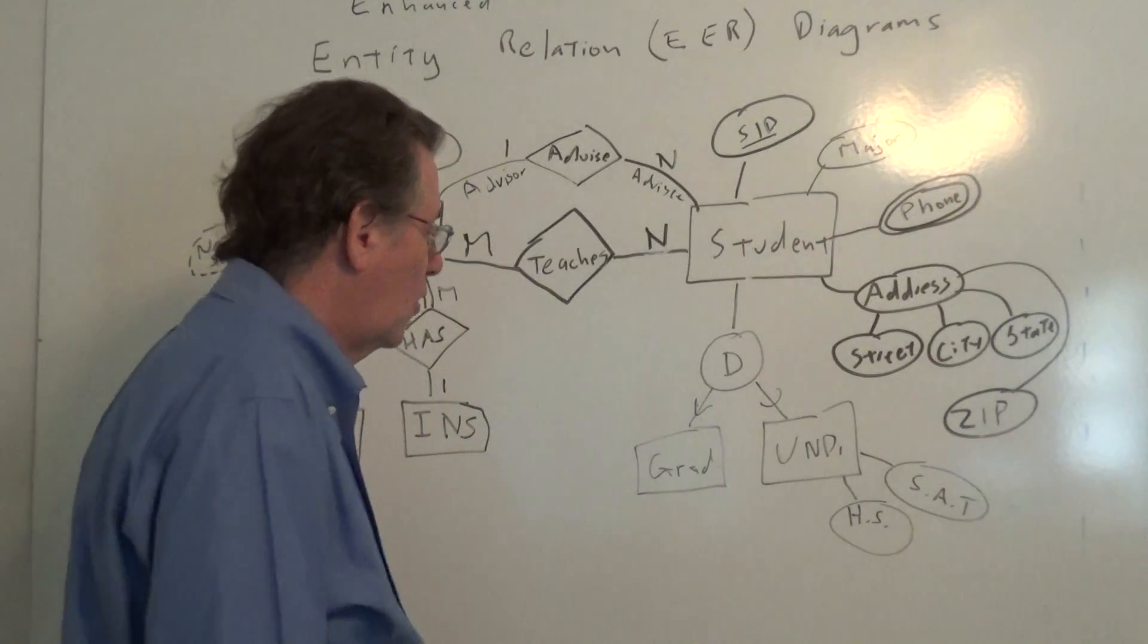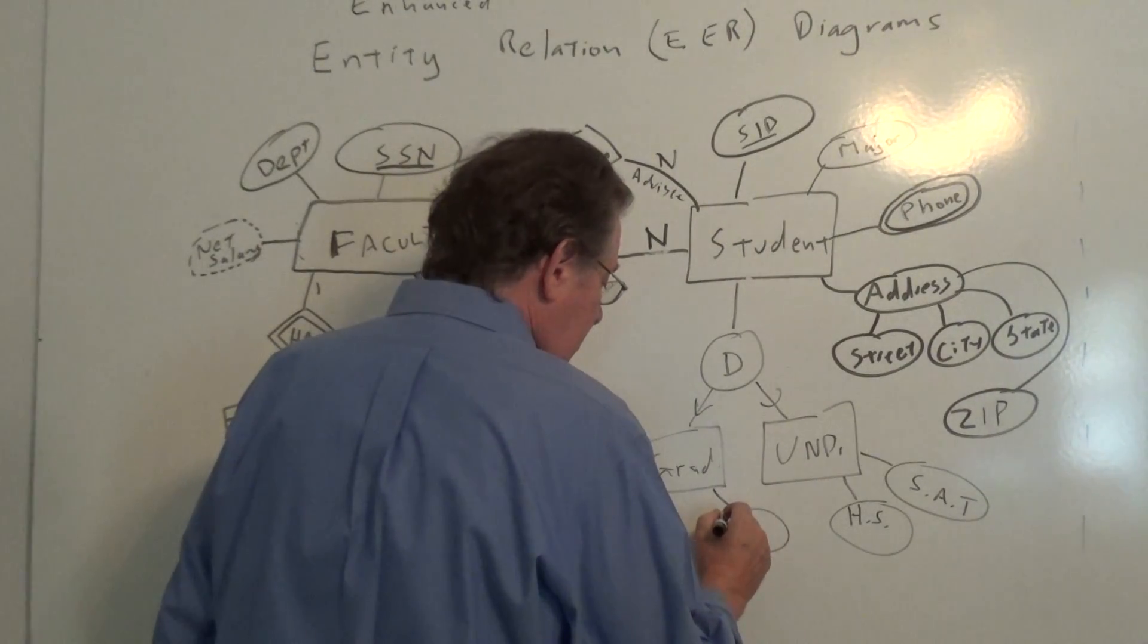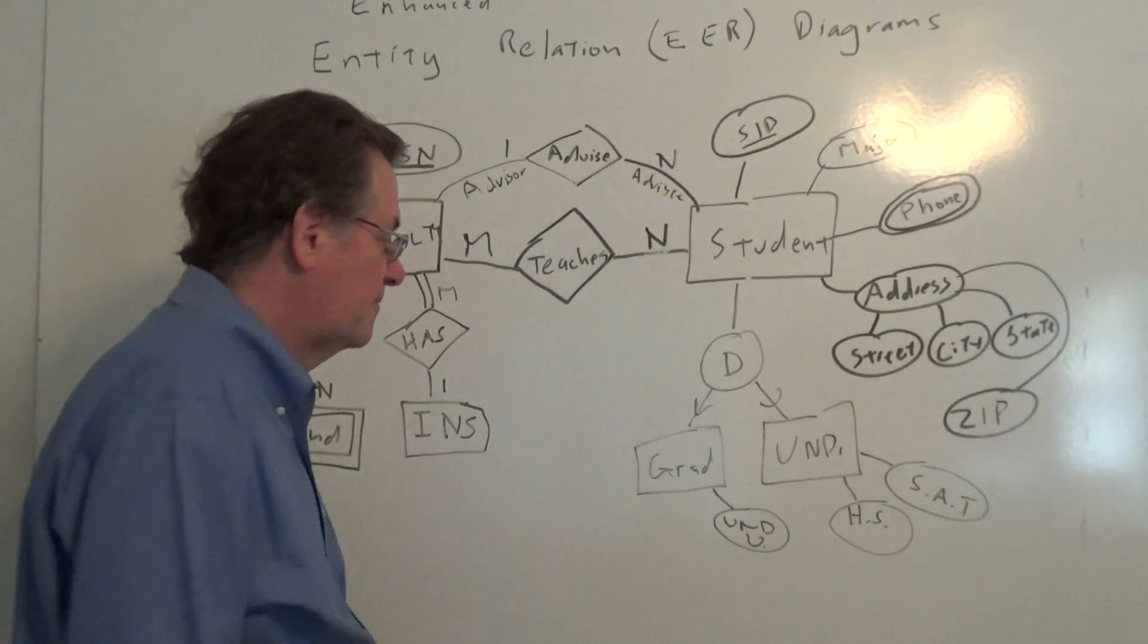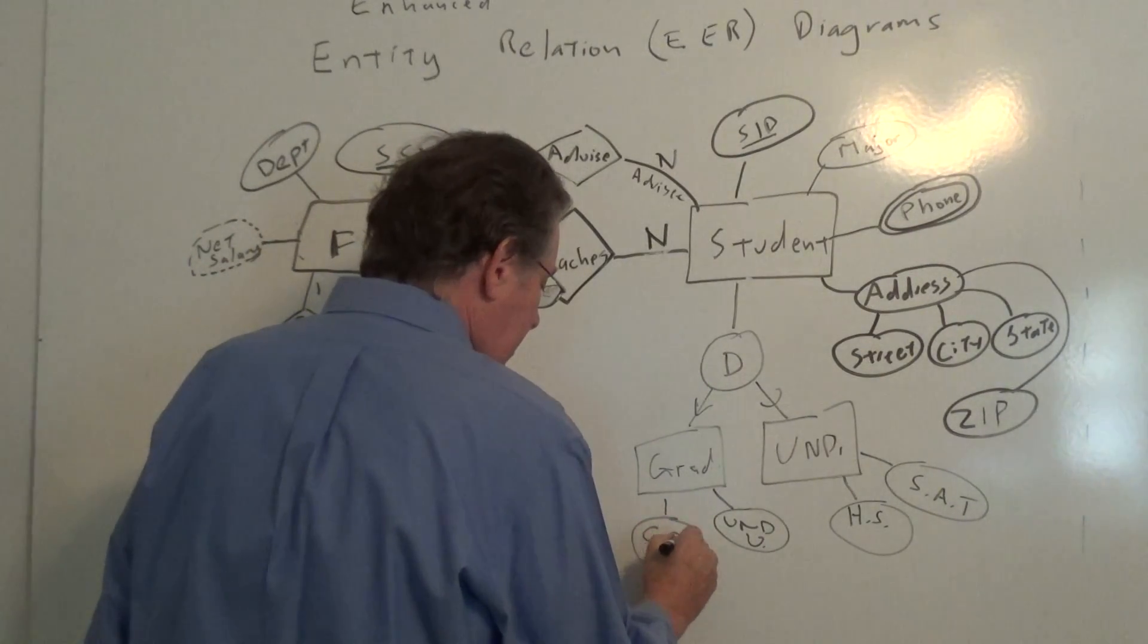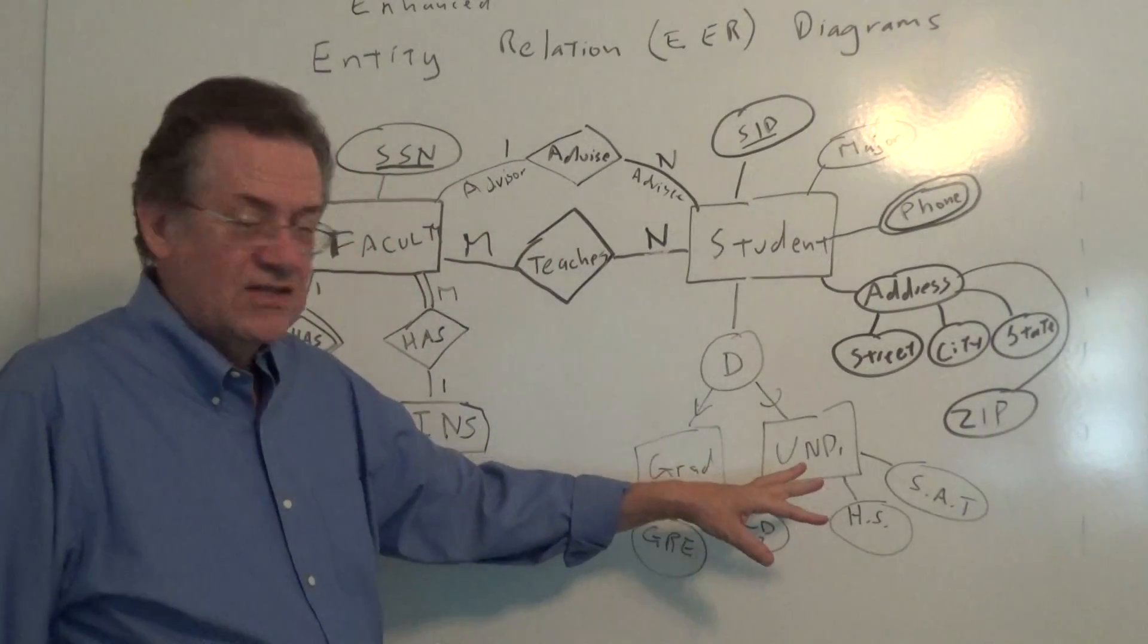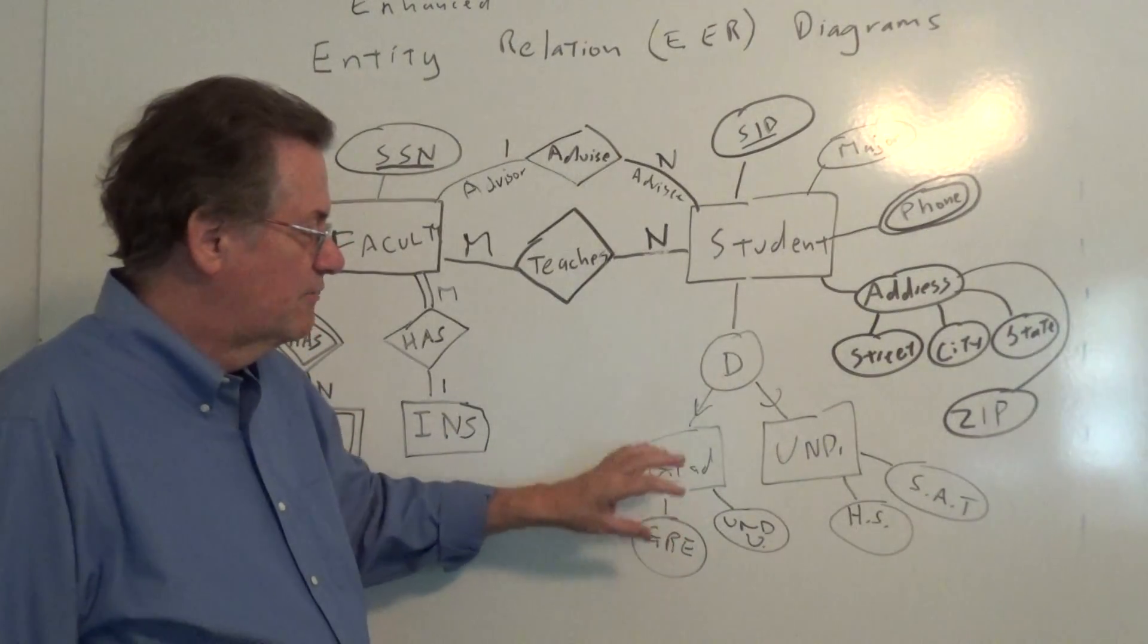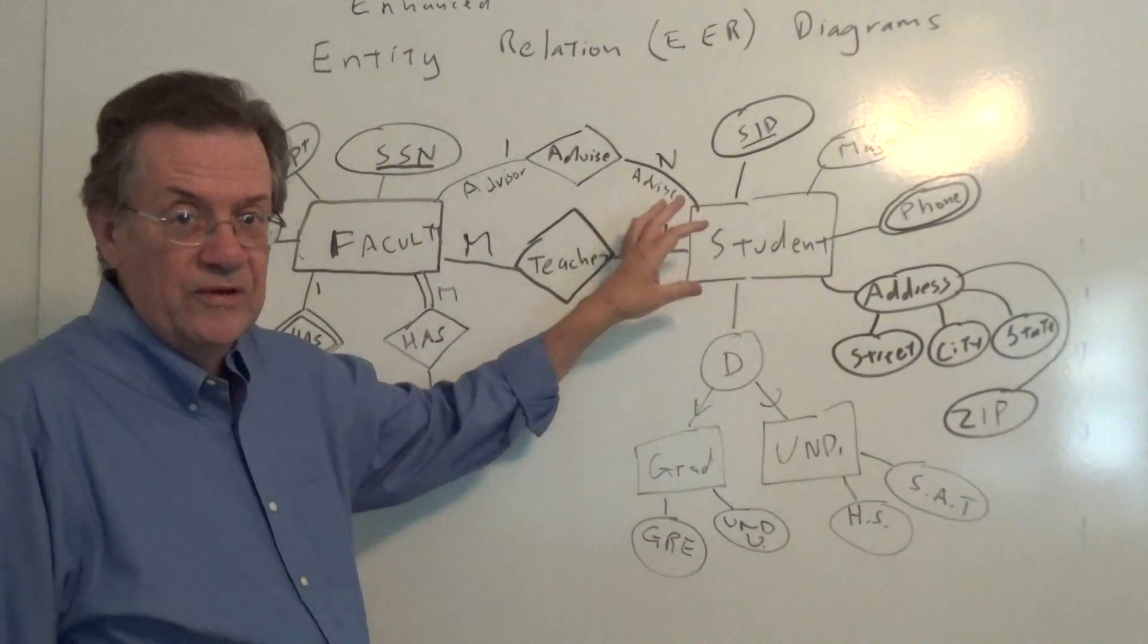We might have the SAT scores, which are unique, let's say, to undergraduate students. On the graduate side, we might have undergraduate university. That is, where do they get their bachelor degree? And then we might have something like the GRE score, which graduate students would take and undergrads would not take until they take that. So we put those attributes that relate specifically to undergraduate students here. Those attributes that relate to graduate students, we'd put there.